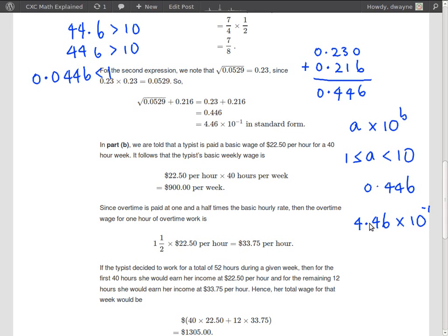So how did we get here? We got here by moving one place to the right. So to get back to the original value we have to move one place to the left, and this 10 to the minus 1 does that. So this here is our standard form. This is the answer. Thank you.